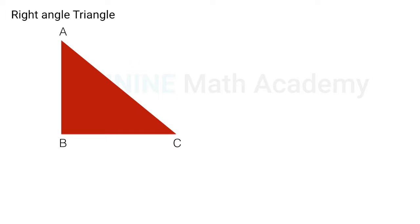Now the next type of triangle is right angle triangle, wherein one of the angles is definitely 90 degrees and in our case it is angle B.